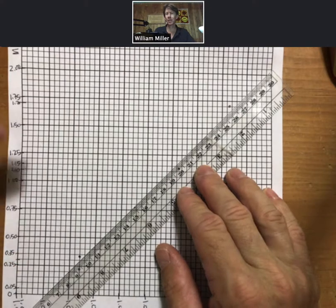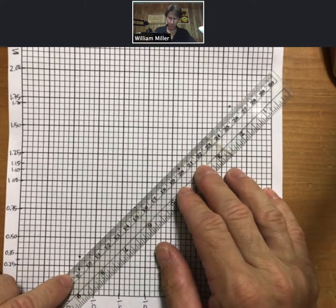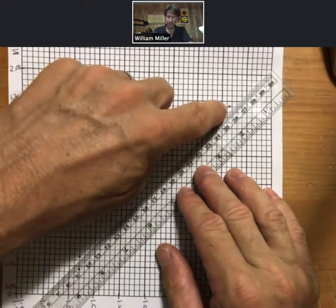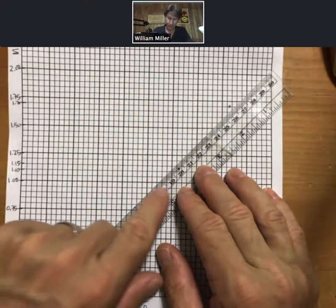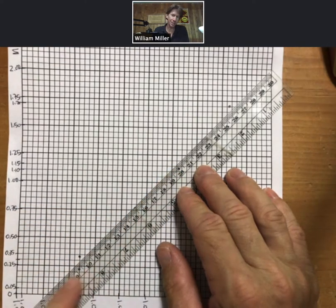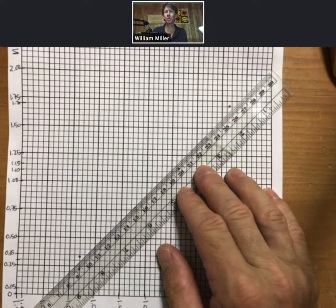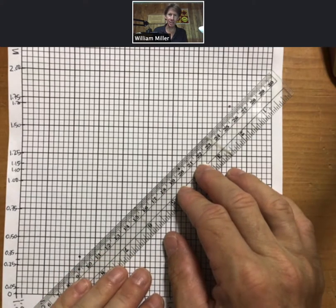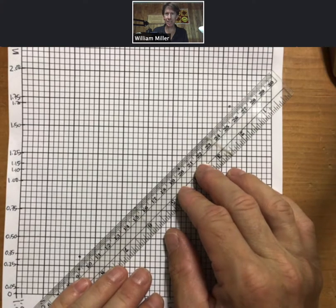When you're doing a best fit line by hand, you want the spacing between the points that are above the line and the spacing from the points to the line below the line to be approximately equal. And for a true best fit line, the squares of the sums of their distances would be equal, and that's what Excel will do.